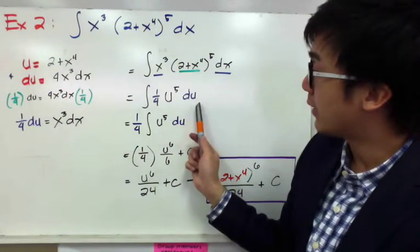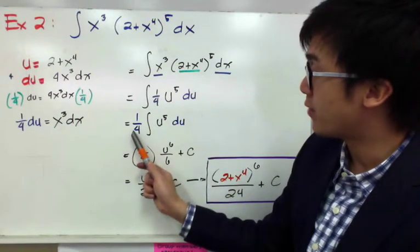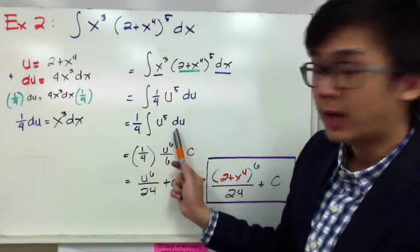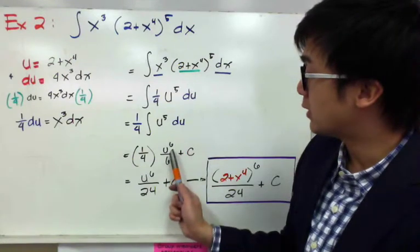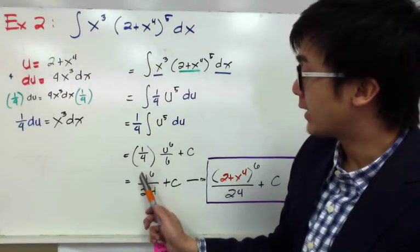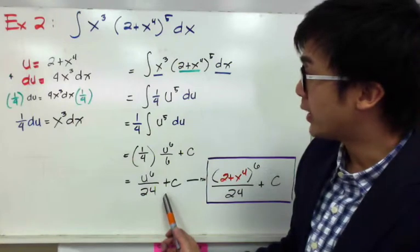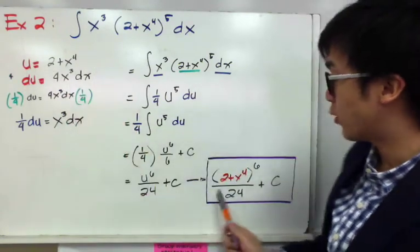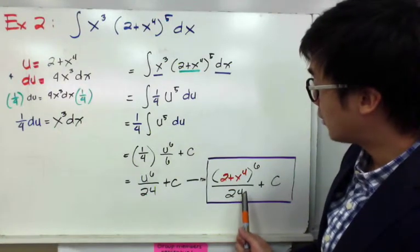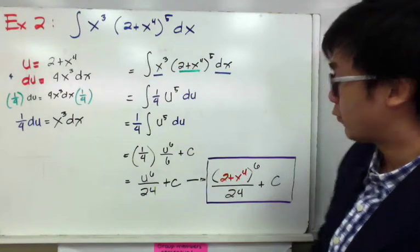Since one-fourth is a constant, we pull it outside the integral and find the integral of u to the fifth power du. The integral of u to the fifth is u to the sixth all over six plus C, times one-fourth. Simplifying gives us u to the sixth all over 24 plus C. Returning u back to the original expression, 2 plus x to the fourth, our final answer is (2 plus x to the fourth) raised to the sixth power, all over 24, plus C.